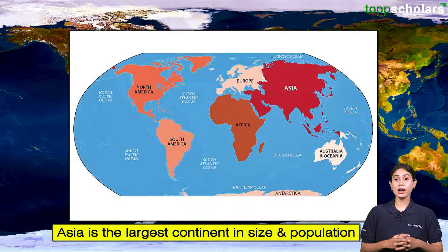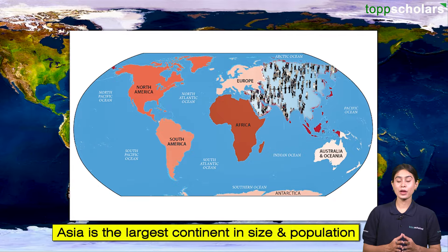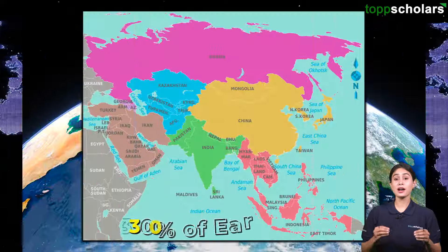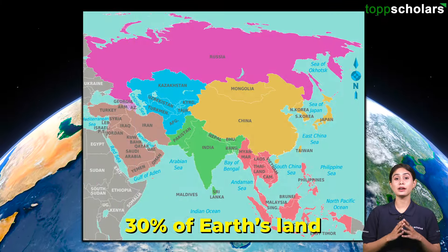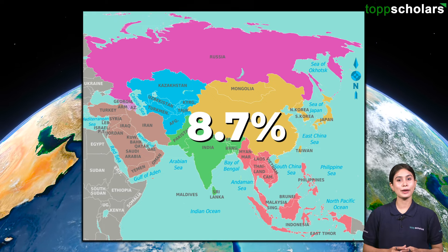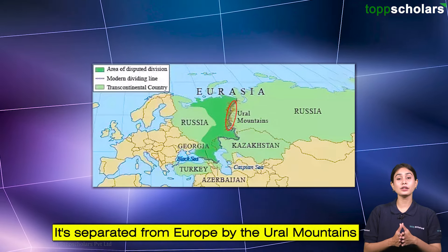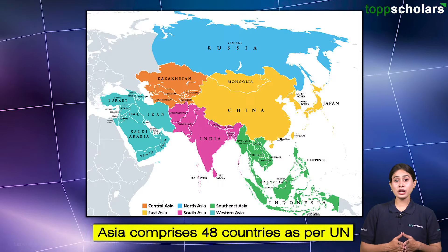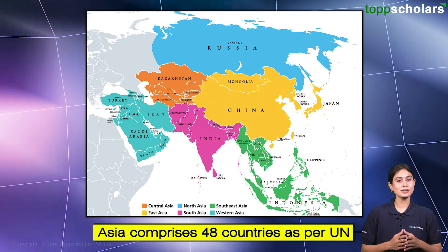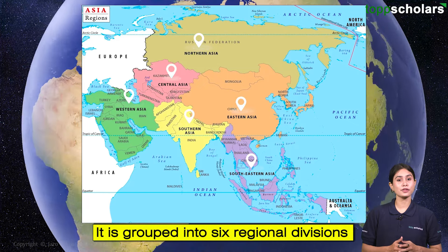Asia is the largest continent in size and population, with approximately 44 million square kilometers, covering nearly 30% of the Earth's land and 8.7% of its total surface area. It is separated from Europe by the Ural Mountains. Asia comprises 48 countries, as per the United Nations definition. It is grouped into 6 regional divisions.